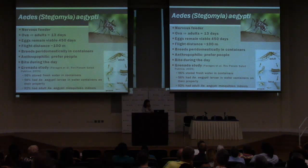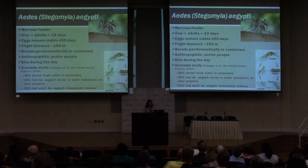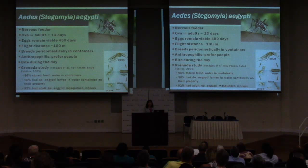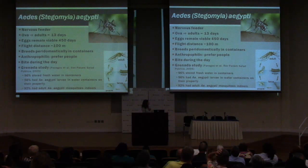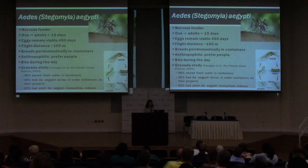The eggs are quite hardy and can remain viable even in dry areas for over a year. They fly about 100 meters. Most importantly, they love to breed domestically — they are container breeders and it takes only about a tablespoon of water in or around a home for breeding. A study done in Grenada and published in 2005 showed that 96% of surveyed homes stored fresh water in containers, over 50% had Aedes aegypti larvae in those containers, and 92% had adult Aedes aegypti within the homes.